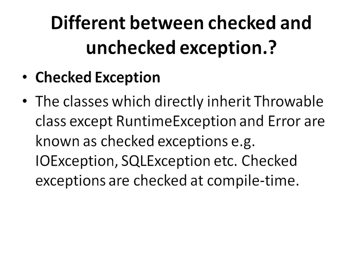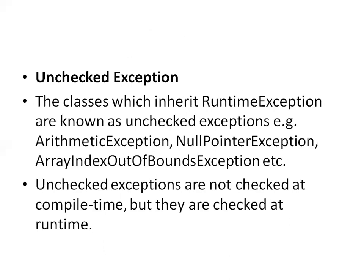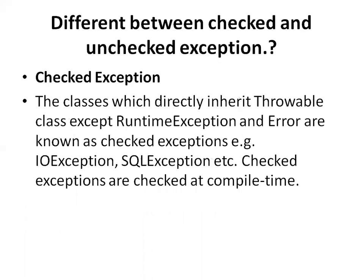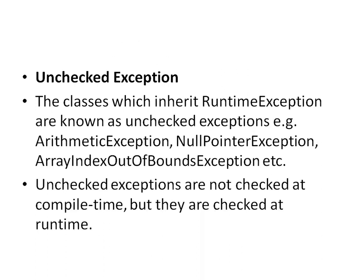What is the difference between checked and unchecked exceptions? Checked exceptions — such as IOException or SQLException — are checked at compile time and are inherited from the Throwable class, except for RuntimeException and Error. Unchecked exceptions are not checked at compile time but are checked at runtime. Classes that inherit RuntimeException are known as unchecked exceptions. Examples of unchecked exceptions include ArithmeticException, NullPointerException, and ArrayIndexOutOfBoundsException. Examples of checked exceptions include IOException and SQLException.